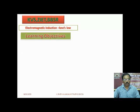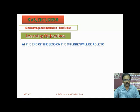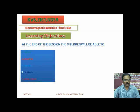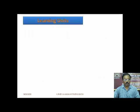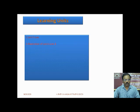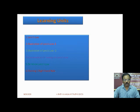Learning objectives: at the end of the session the children will be able to define, describe, explain, illustrate and understand the given learning units. The following learning units are: 1. Lenz's Law, 2. Illustration of Lenz's Law, 3. Conservation of Energy on Lenz's Law, 4. Demo on Lenz's Law, and 5. Fleming's Right Hand Rule.